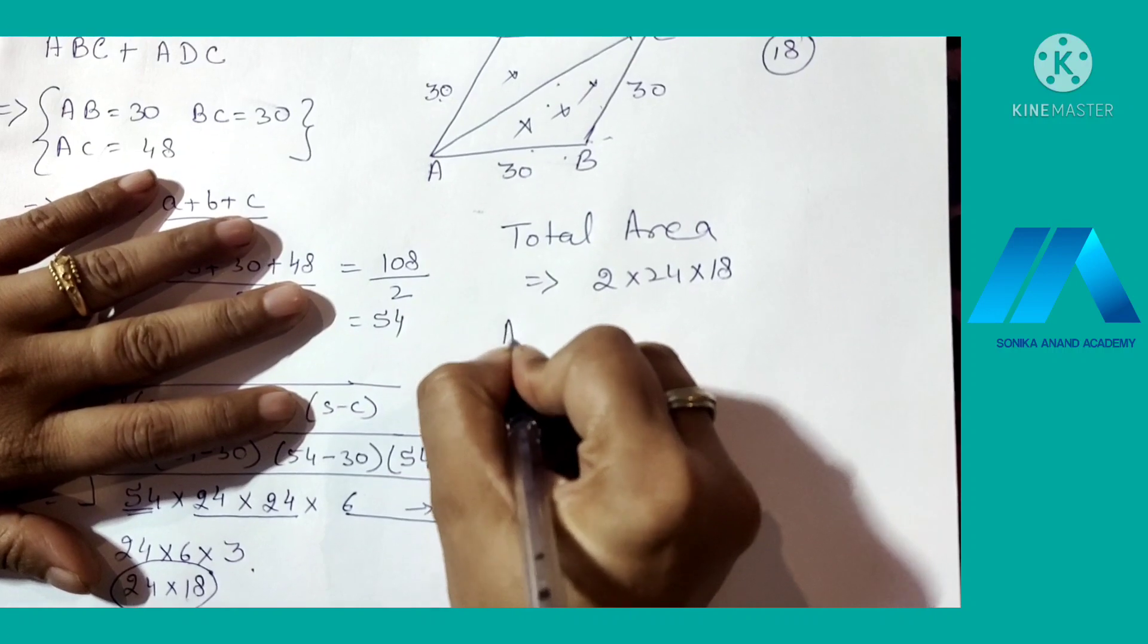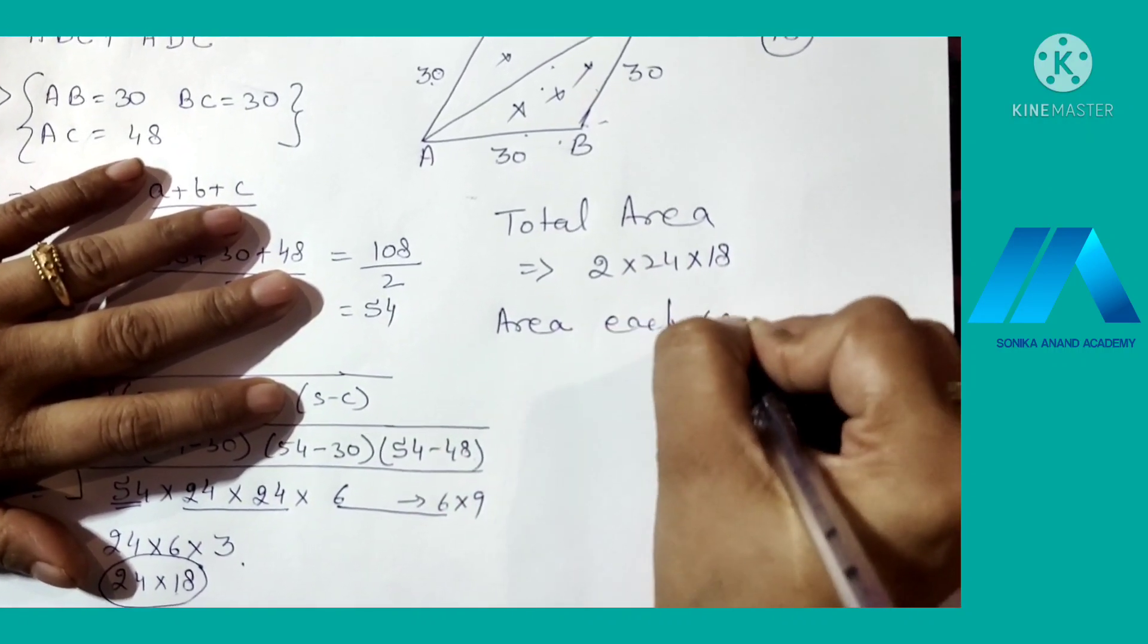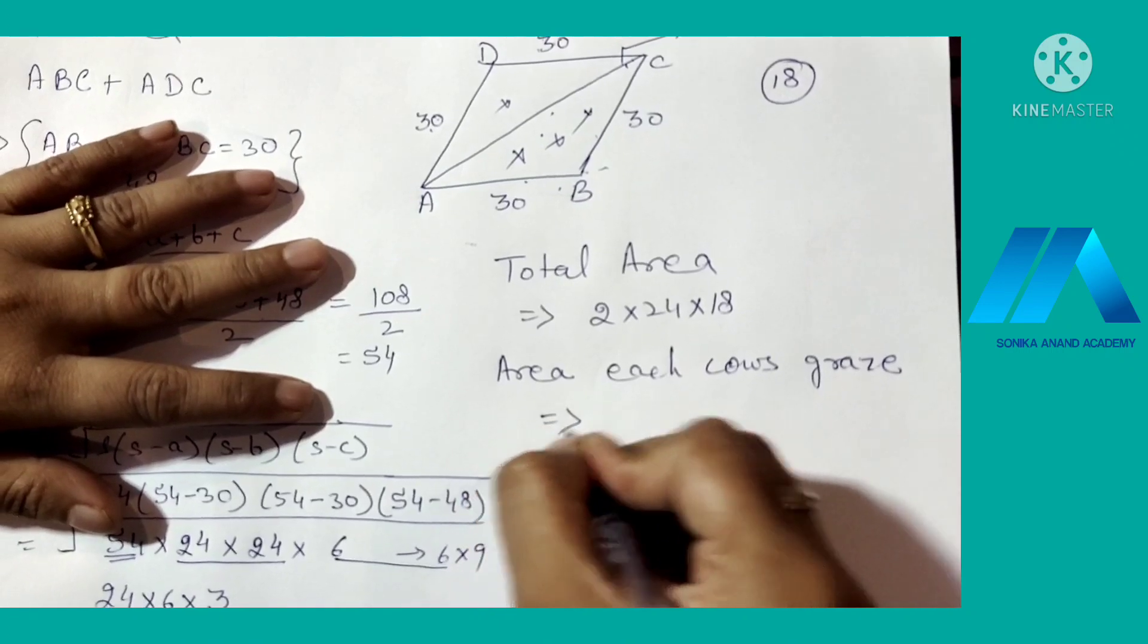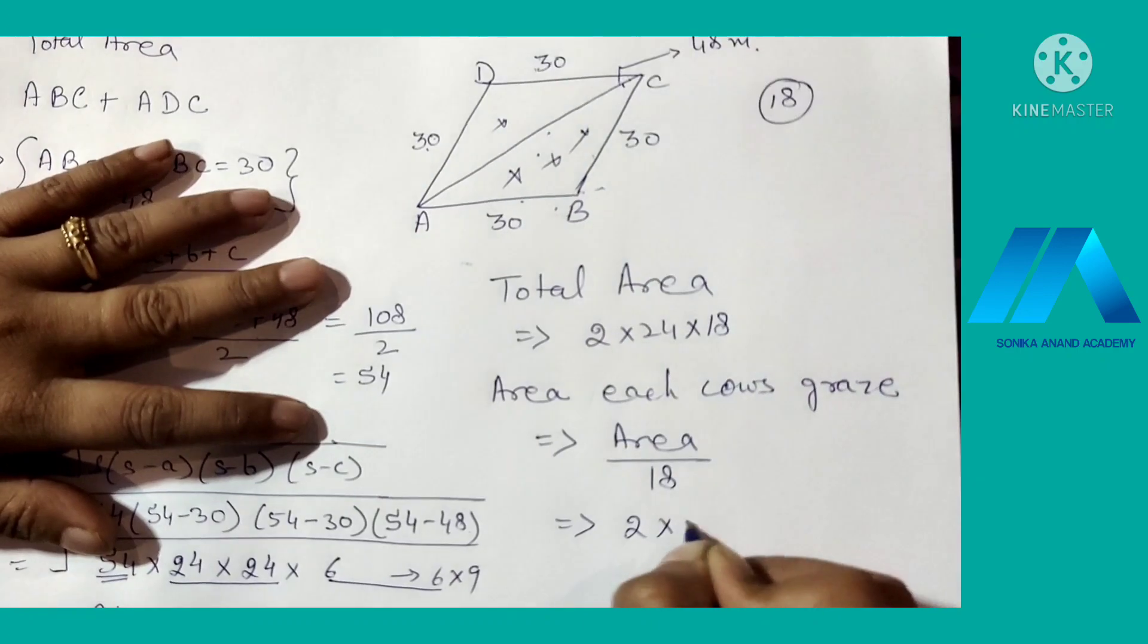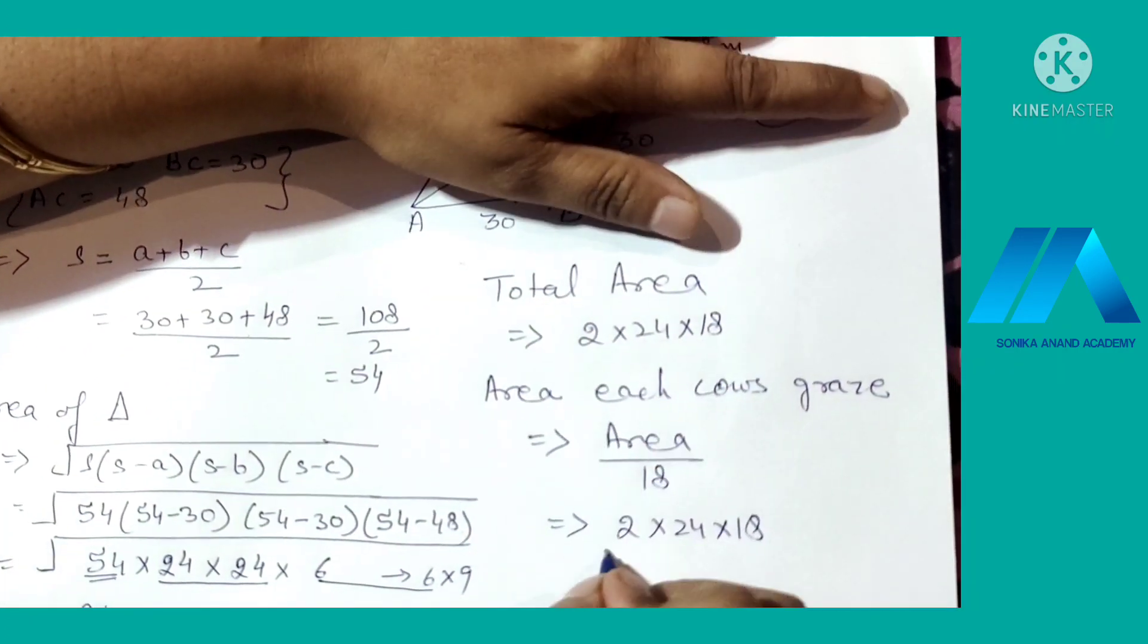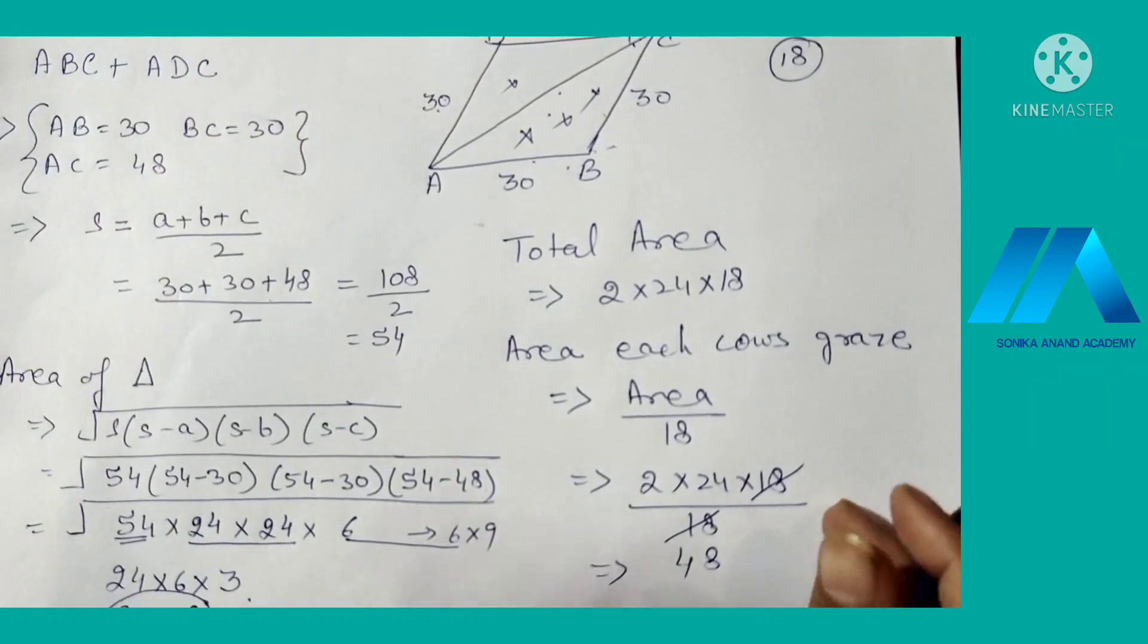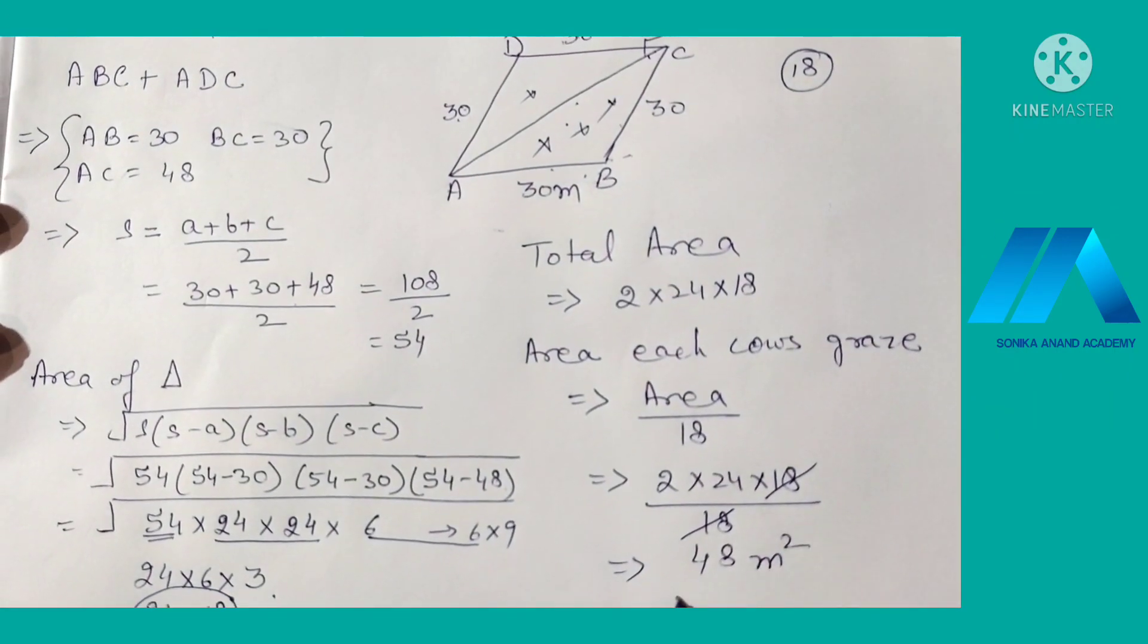Now how much area each cow grazes? Area each cow grazes. Now there are 18 cows. So we divide the whole area with 18, that means 2 into 24 into 18. This is the area of the rhombus park and this is 18. 18 get cancelled and ultimately we get 2 times 24, and this is overall given in meters, so meter square. This is the area: 48 square meters.